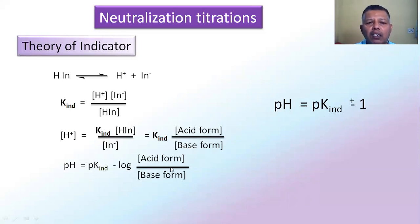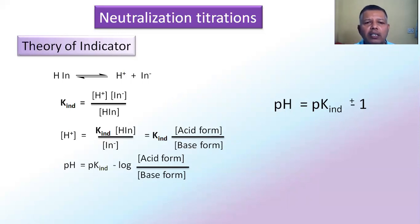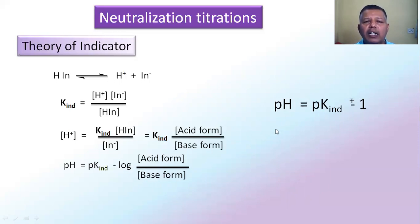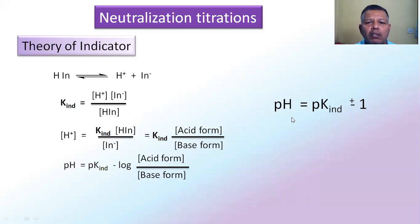When the acid form and base form concentrations are in multiples of 10 — such as 10⁻¹, 10¹, 10², etc. — the pH of the solution equals pKIN ± 1. Within this pH range, the indicator shows a change in color, which may span about 2 pH units, for example from 4 to 7 or 6 to 9. Therefore, for a particular titration pH, we can select the appropriate specific indicator.